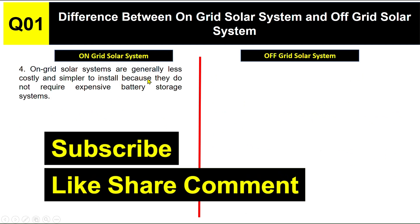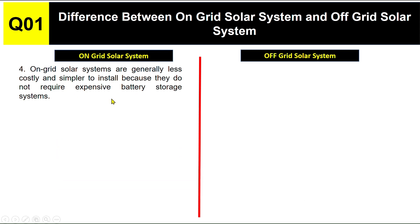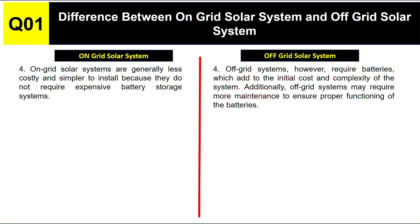On-grid solar systems are generally less costly and simpler to install because they do not require expensive battery storage systems. The on-grid solar system is cheaper because battery storage is not involved.